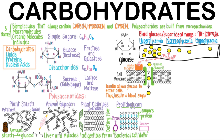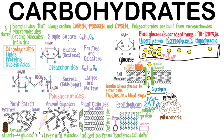Once inside the cell, glucose is further broken down in the cytoplasm in the process of glycolysis into two 3-carbon molecules called pyruvate. Pyruvate enters the mitochondria where complete breakdown of the carbon molecules is finished with many enzymatic reactions of the citric acid cycle. The electron transport chain on the inner mitochondrial membrane then generates ATP energy for cellular activities. Glucose is therefore a key source of ATP production for many cells.